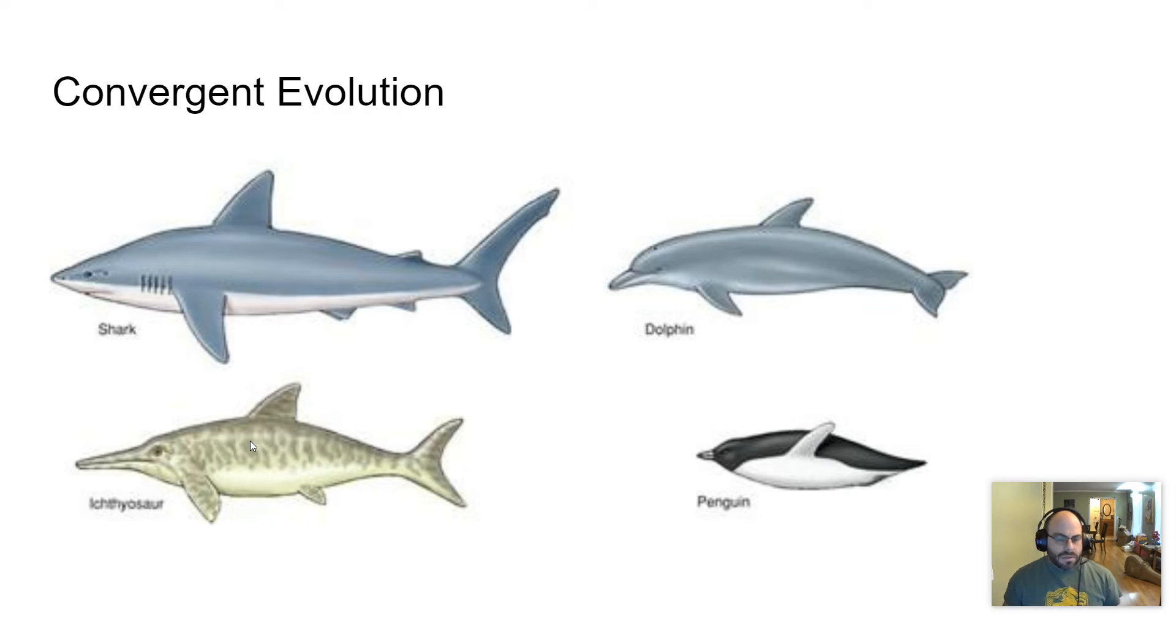So on this too is this idea of convergent evolution - talking about natural selection creating similar adaptations among different species, or having similar selective pressures. So take for instance,